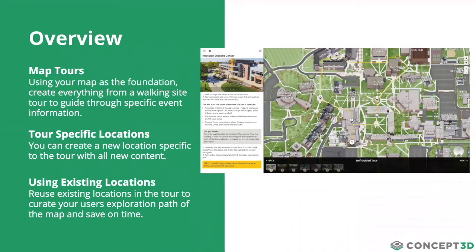For setting up a map tour, we have two options for including tour stops. The first is creating a new tour stop location — adding new media and description, all created within the tour itself. The second option, which is really nice, is you can repurpose existing locations. If you already have locations that are rich in content with tons of imagery and videos, we can repurpose those locations and include them within map tours as well.